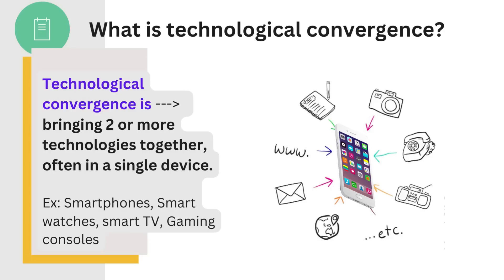But today, smartphones combine the functionality of all these separate devices, easily replacing them in a single device. This is simply what is meant by digital convergence. Apart from smartphones, we also see these convergences in smart TVs, smartwatches, and gaming consoles as well.